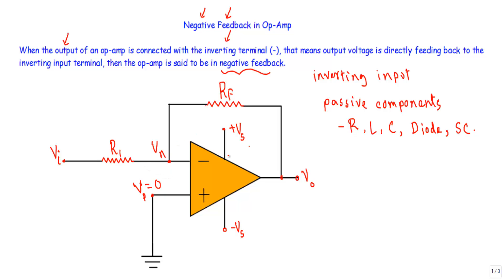This is the circuit structure of an operational amplifier inverting amplifier circuit. This is the output terminal, this is the inverting terminal, and this is the non-inverting terminal. The output terminal is connected with the inverting terminal through a resistor, which we indicate as RF — the feedback resistor. RF is a passive component, so our op-amp is in negative feedback.